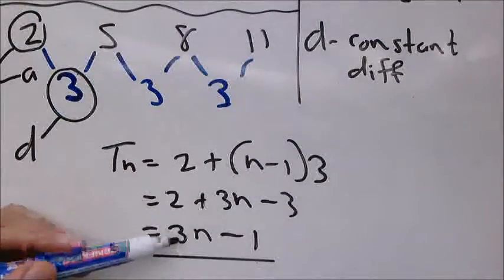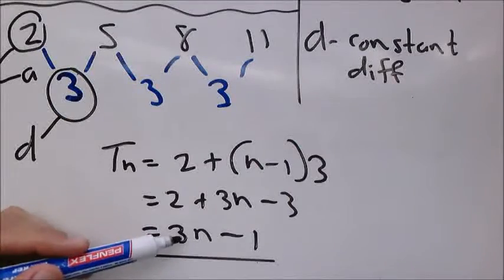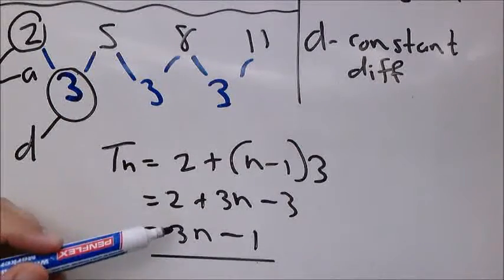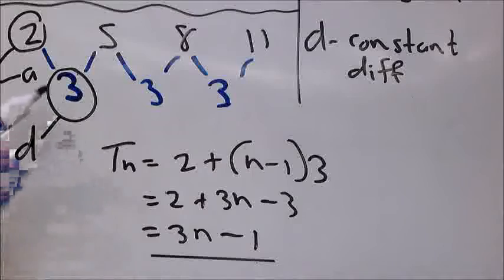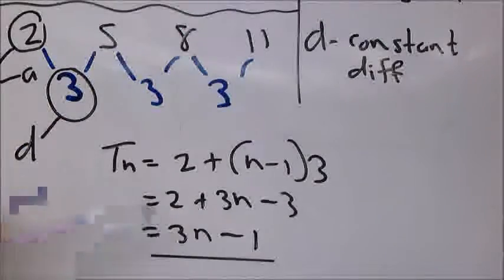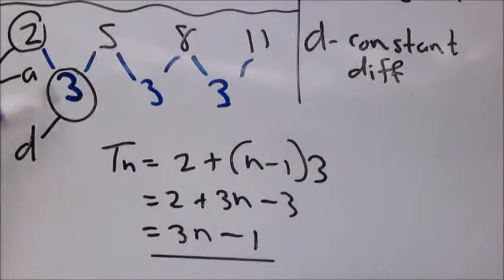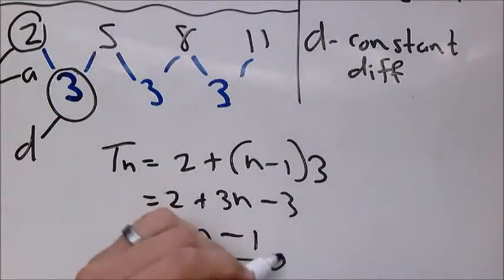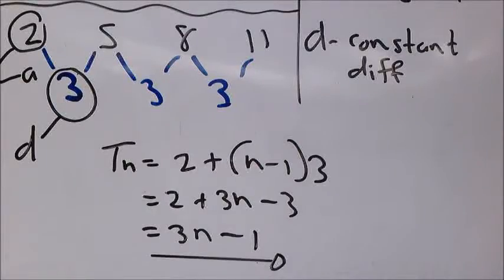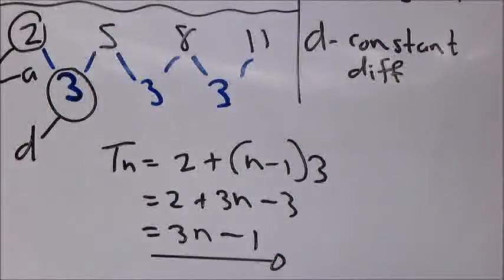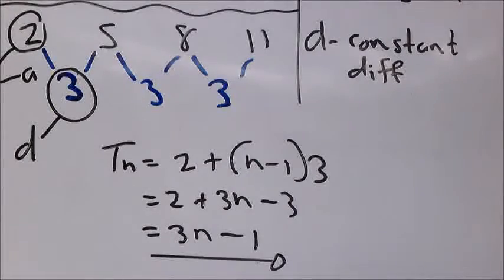You put the 3 in front of the n—that's your constant difference. Then you ask yourself: what do I need to do with this 3 to get to the first value, which is 2? That is minus 1. Then you have the expression. That's another way of doing it. This is basically a quick summary of linear number patterns with a first constant difference.